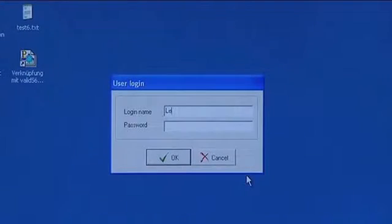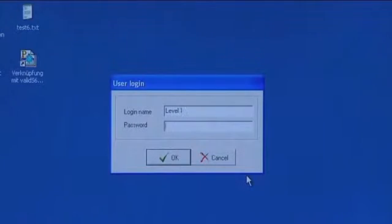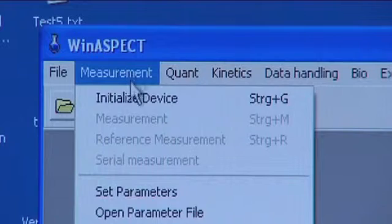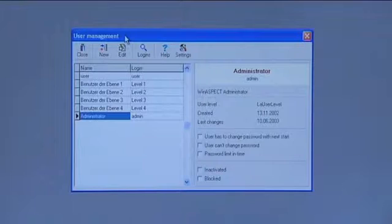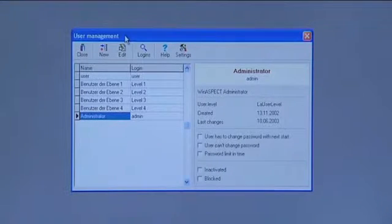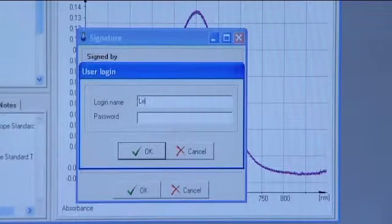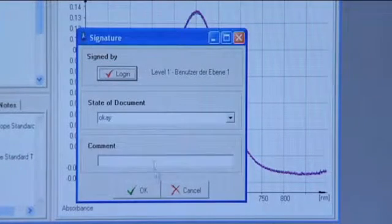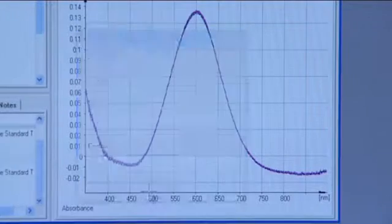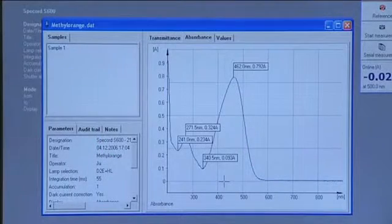The WinAspect software for PC control and evaluation of the Spicord S600 is impressively versatile, convenient, and with a clearly arranged user interface. A comprehensive user management, an electronic signature facility, and the audit trail satisfy the requirements of FDA 21 CFR Part 11. The features integrated in WinAspect ensure reliability, lucidity, and traceability of all actions throughout the measuring time.